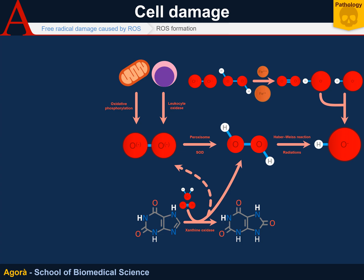In this reaction, iron, instead of being consumed, returns to its ferric form again, and this is why this metal may cause considerable radical damage. Finally, there is peroxynitrite, which is formed by the reaction between nitric oxide, secreted in numerous processes, and superoxide anion.